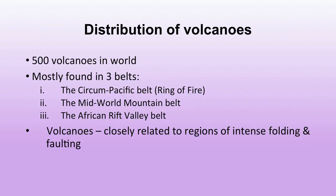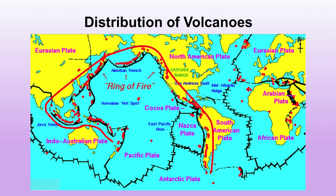Regarding the distribution of volcanoes: there are almost 500 volcanoes in the world and they are mostly found in three important belts. One is the circum-Pacific belt, also known as the Ring of Fire, located around the Pacific Ocean. The second is the mid-world mountain belt. The third is the African Rift Valley belt. Volcanoes are closely related to regions of intense folding and faulting. In the picture you can see the distribution, with a ring of fire shown around the Pacific Ocean.